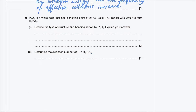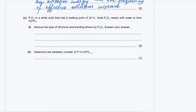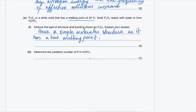Part C: P₄O₆, phosphorus(III) oxide, is a white solid with a melting point of 24°C. Solid phosphorus(III) oxide reacts with water to form phosphorous acid. Part 1: deduce the type of structure and bonding shown by P₄O₆. Since the melting point is as low as 24°C, it must have a simple molecular structure.